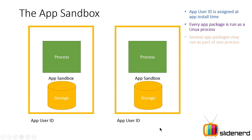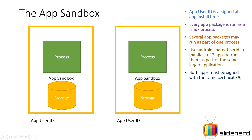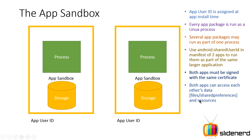Depending on the app being installed, there's an app user ID and a process with the package name. Multiple apps can be part of the same process, or two different processes can share data with each other despite belonging to different processes — because they have the same app user ID. This is done with the attribute Android:sharedUserId, which we'll look at in the next video. Both apps must be signed with the same certificate. Remember, both apps can access each other's data — files, shared preferences, and resources.